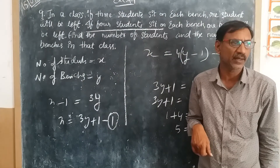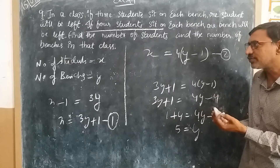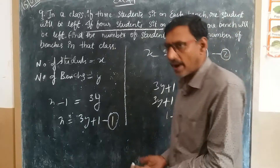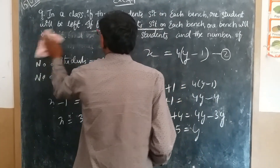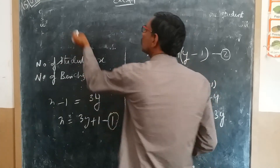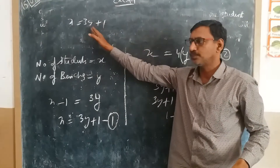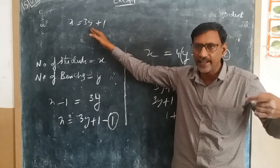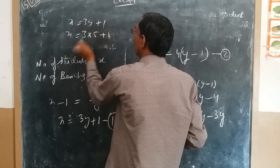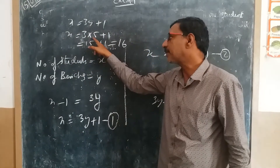Y is the number of benches, so in that class we have 5 benches. Now I will find x from y using the first equation. My x is equal to 3y plus 1. Substituting y equals 5: x equals 3 times 5 plus 1, which is 15 plus 1, equal to 16.